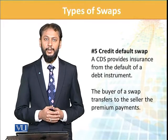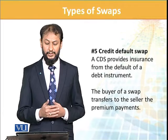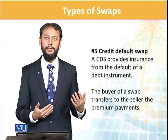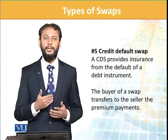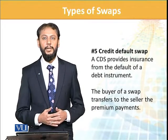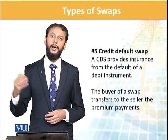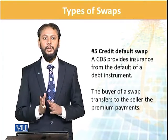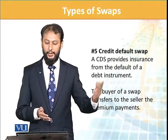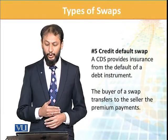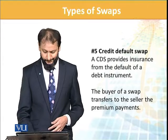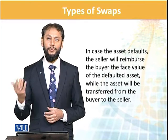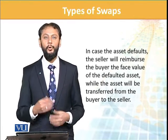That is a credit default swap, or CDS. A credit default swap is like an insurance — it provides insurance for the default of a debt instrument. If you have a car damage, the insurance company will pay. Similarly, if you hold a debt instrument, the risk of default moves to the other party. The buyer of the swap transfers the risk to the seller. In case of an asset default, the seller will reimburse the buyer the face value of the defaulted instrument.